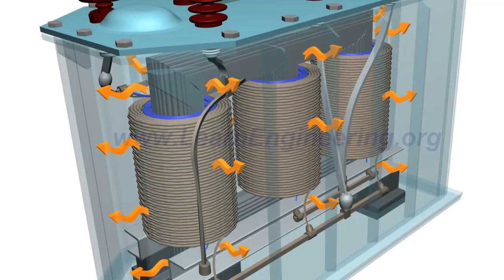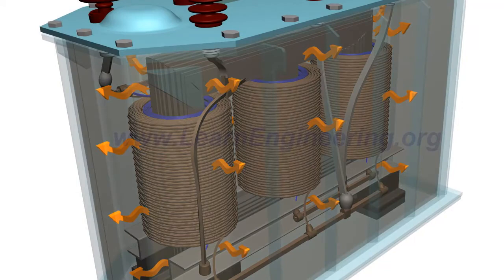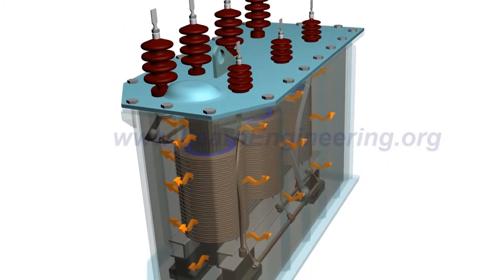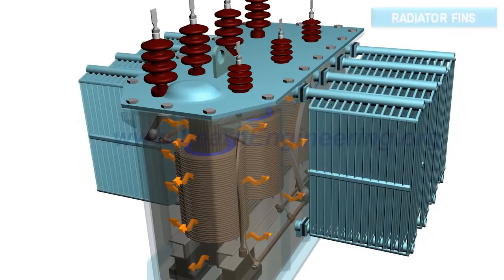So, usually the transformer is immersed in a cooling oil to dissipate the heat. The oil dissipates the heat via natural convection.